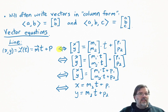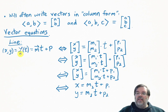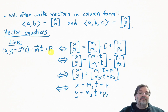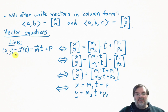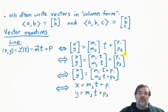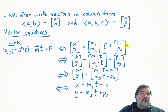Vector equations — we've seen them before. For example, the parametric equation of a line. Given an equation L of t, the points on that line with coordinates x, y, we'd write that as the vector m times t plus the base point p. To convert that into this new notation, we can also write points as columns. So x, y becomes a column vector. The slope vector has components m1, m2, times t, plus the base point p1, p2. And you can use your vector operations on vectors even when they're in column form.